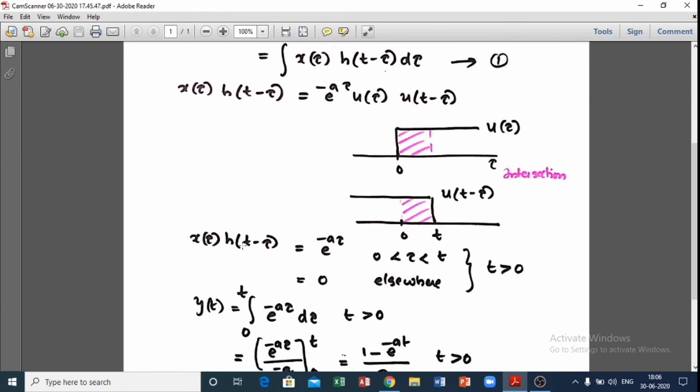x(τ)h(t-τ) value is equal to e^(-aτ) for the range between 0 to t. This is e^(-aτ). The multiplication area is 0 elsewhere. This is the expression of x(τ)h(t-τ).